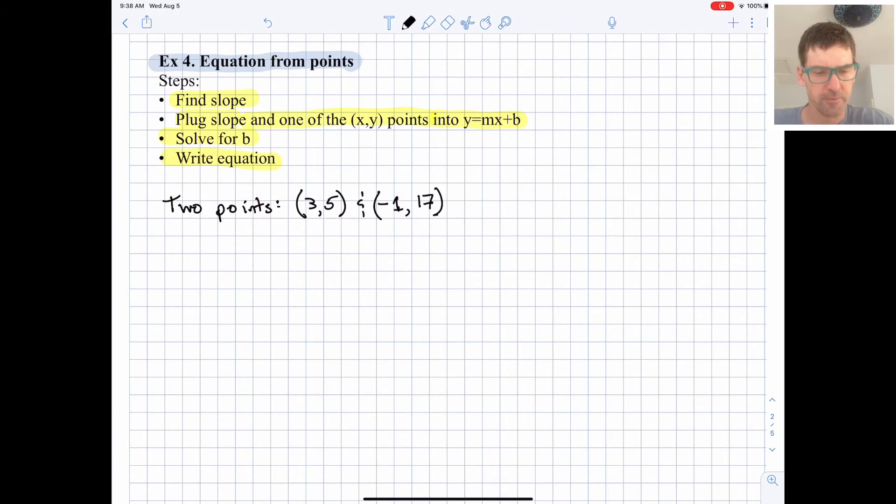So we're going to find the slope first and remember slope is the change in y over the change in x. That triangle is the Greek letter delta and that often means change. So the change in y over the change in x, which really just means we're subtracting our y values and then dividing by the difference in the x values. 5 minus 17 is negative 12, 3 minus negative 1 is a positive 4, so our slope is negative 3. We got the slope figured out, but we still need to find b.